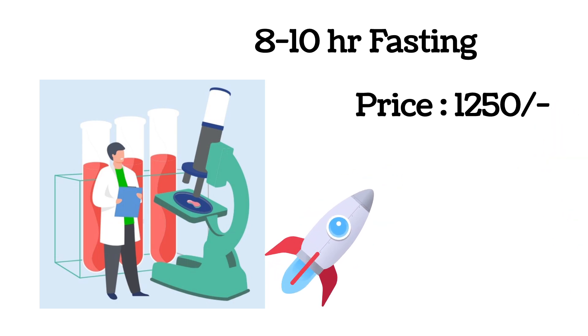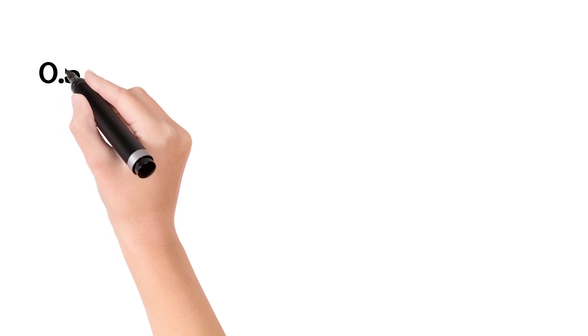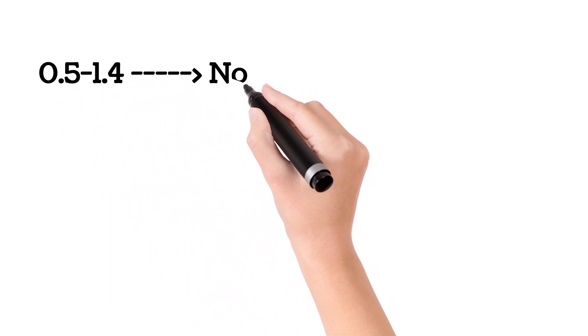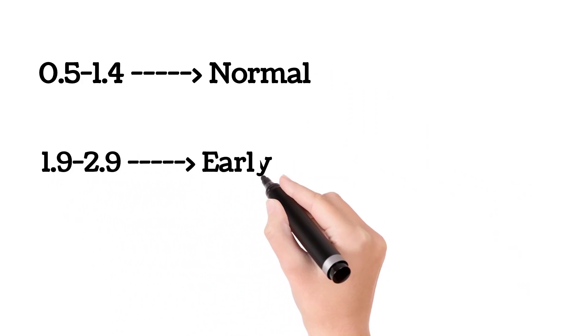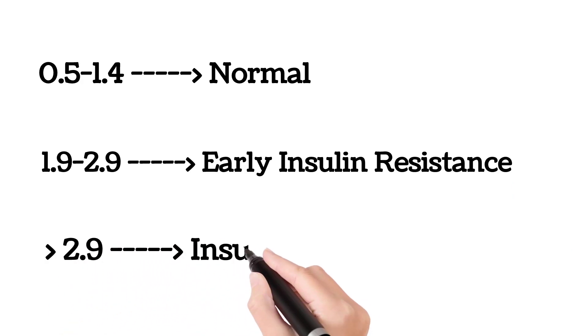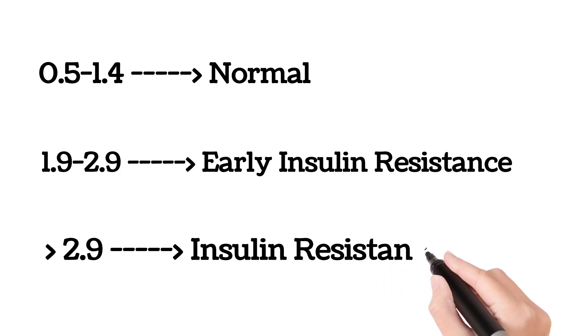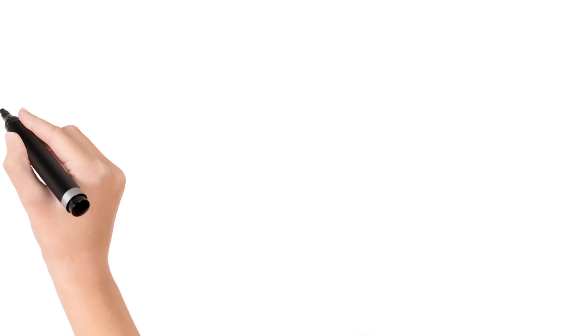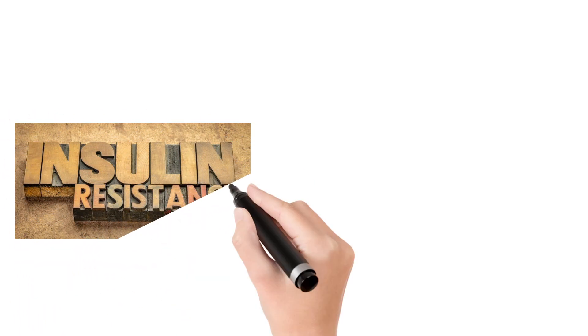Coming to the results and normal values: generally, 0.5 to 1.4 is normal. If the person has 1.9 to 2.9, there are early signs of insulin resistance, meaning insulin resistance will come in a few days or months. If the levels are greater than 2.9, it means the person has insulin resistance.